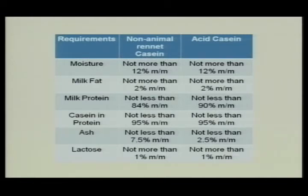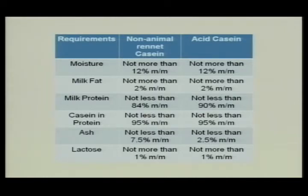The moisture shall not be more than 12% for both non-animal rennet casein and acid casein. Milk fat shall not be more than 2% in either type. Milk protein content should not be less than 84% in non-animal rennet casein, while in acid casein it should not be less than 90%. Casein in the protein should not be less than 95% in both cases. Ash shall not be less than 7.5% for non-animal rennet casein and not less than 2.5% for acid casein.